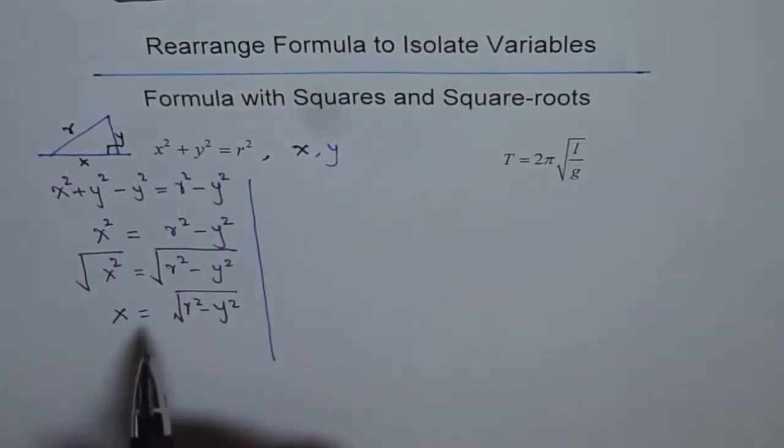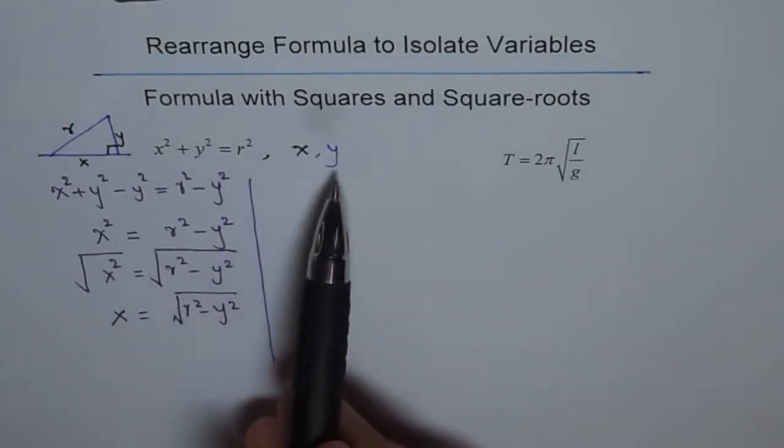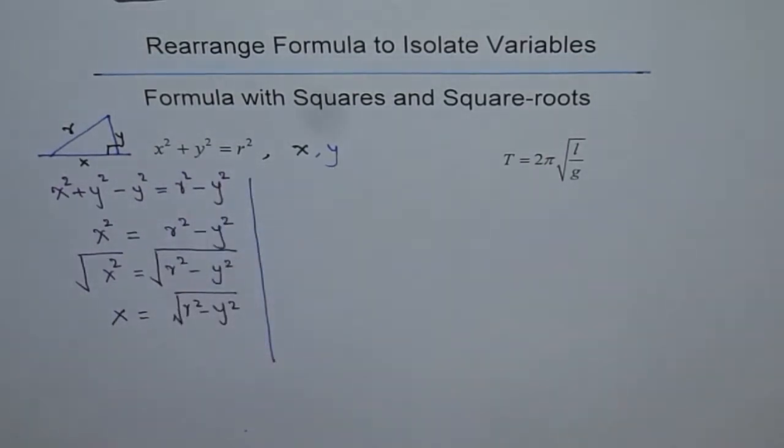In that case, square root of x square will be x and this will be square root of r² - y². So, that is the formula for x. So, I like you to do same steps and get the formula for y. So, that is your exercise.